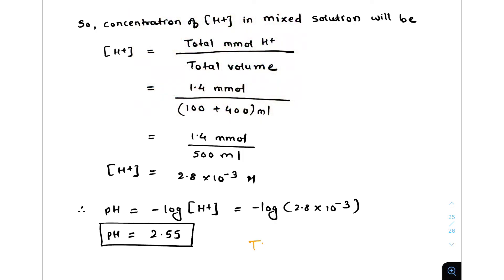So the pH of the mixed solution of 100 ml solution A and 400 ml solution B equals 2.55. Thank you for solving this question with me — if you have any questions, comment below.